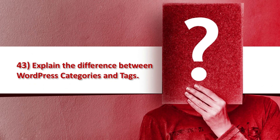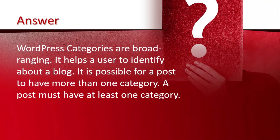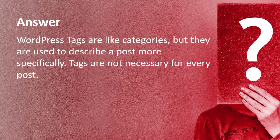Question number 43 is very important: explaining the difference between WordPress categories and tags. WordPress categories are broad-ranging and help a user identify what a blog is about. It is possible for a post to have more than one category, and a post must have at least one category. WordPress tags are like categories but they are used to describe a post more specifically. Tags are not necessary for every post.